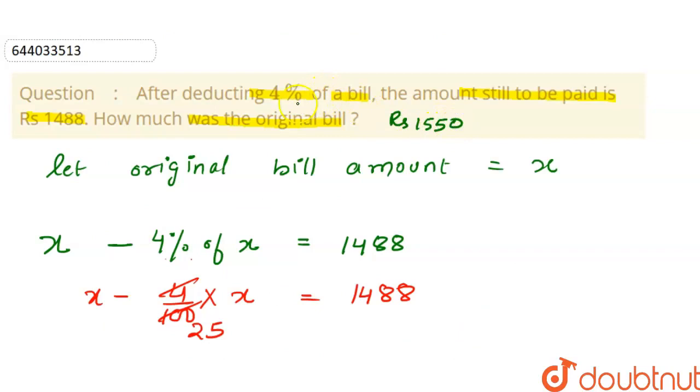After deducting 4% of it, he has to pay 1488 rupees. So the total bill amount is this. Thank you.